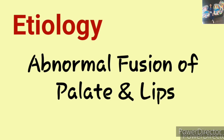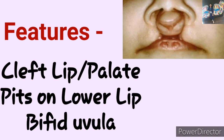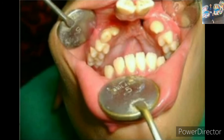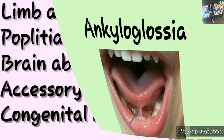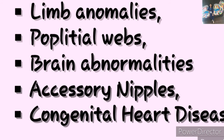Summary: The etiology of Van der Woude syndrome is abnormal fusion of the palate and lips causing cleft palate, with deletion at chromosome 1q32. Males and females are equally affected, occurring in 1 to 2 lakh of the population. Features include cleft lip, cleft palate, pits on the lower lip, and bifid uvula in some cases. Lip pits occur due to opening of accessory salivary glands. Other anomalies include missing teeth especially incisors and premolars, high arched palate, syngnathia, and ankyloglossia. Extra-oral manifestations include limb anomalies, popliteal webs, brain abnormalities, accessory nipples, and congenital heart diseases.